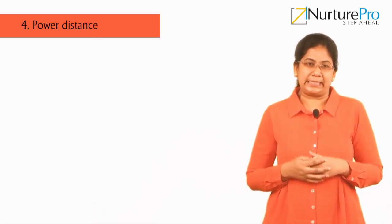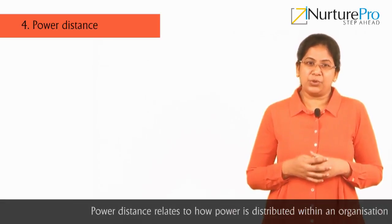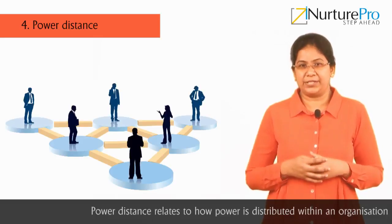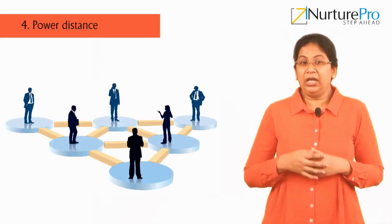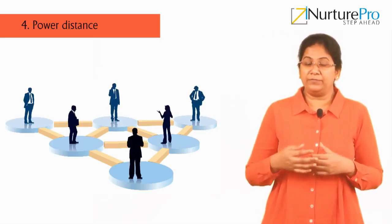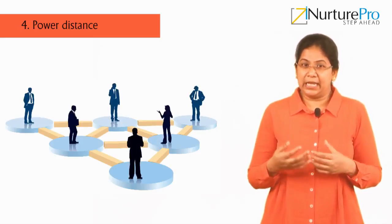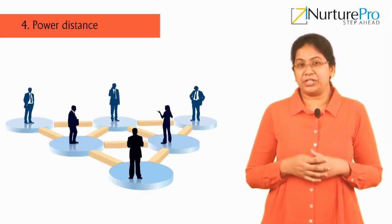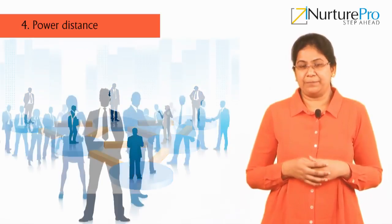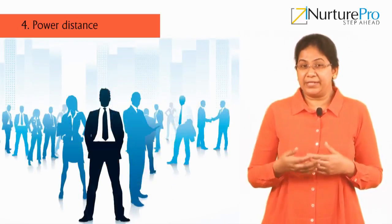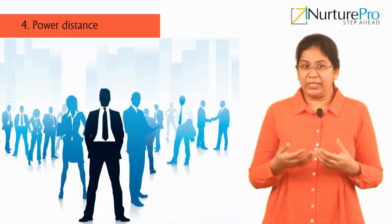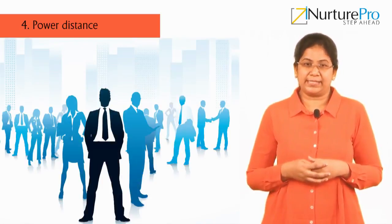Factor 4: Power Distance. Power distance relates to how power is distributed within an organization. A low power distance would mean that there are more informal hierarchies that allow for interaction between executives and their subordinates. Managers ask for feedback from employees and will even socialize with subordinates.